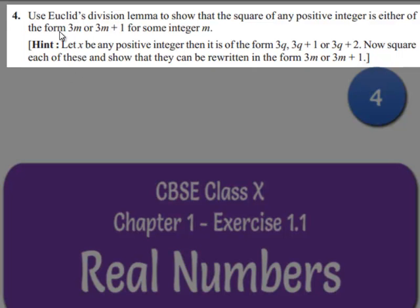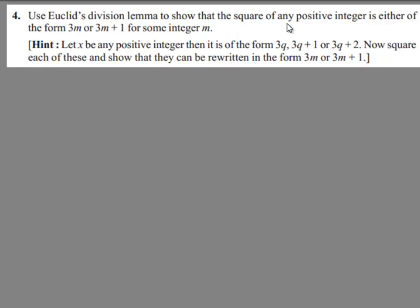Now let us move on to the fourth question. The question is: use Euclid's division lemma to show that the square of any positive integer is either of the form 3m or 3m plus 1 for some integer m. The hint given is: let x be any positive integer, then it is of the form 3q, 3q plus 1, or 3q plus 2. Now square each of these and show that they can be written in the form 3m or 3m plus 1.